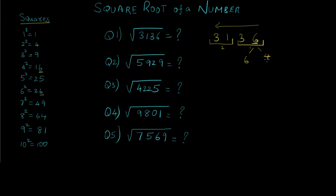So 6 and 4 are possible candidates at the units place. For the tens place, we need to observe the number 31 and find out the largest number which is less than 31. In that case it is 25, which is 5 squared. So the tens place number has to be 5. We've already got the answer to our tens place, that is 5.